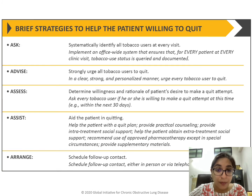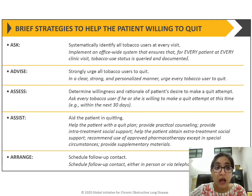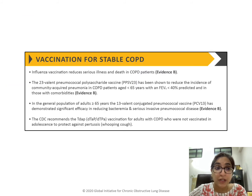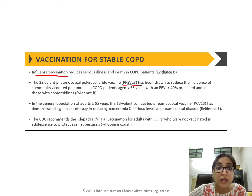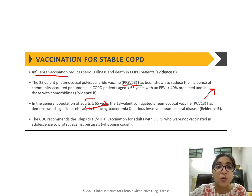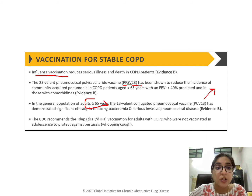Smoking cessation is a very important part of COPD management and should be covered in detail with every COPD patient. Remember the five A's: Ask, Advise, Assess, Assist, and Arrange. Regarding vaccinations, any COPD patient must receive at least two: the influenza vaccination each year, and the PPSV23 (23-valent pneumococcal polysaccharide vaccine), or for patients above 65 years, the PCV13 conjugate pneumococcal vaccine which is given once in a lifetime. The CDC has also included Tdap (pertussis) vaccination for COPD patients not vaccinated in adolescence.